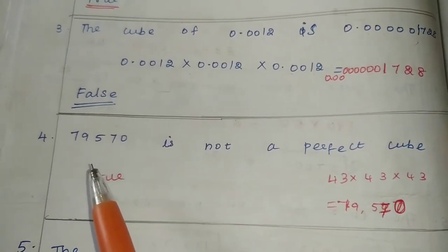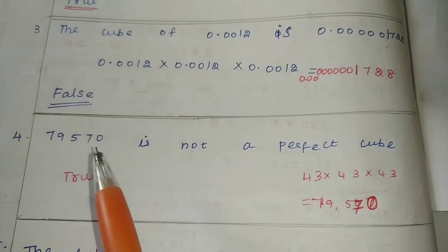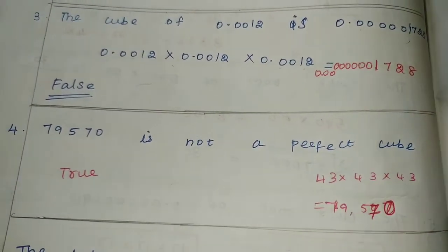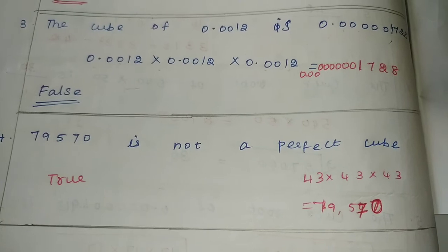Next, the fourth one: 79570 is not a perfect cube. Let's check — once you factor the number, is 79570 a perfect cube or not?